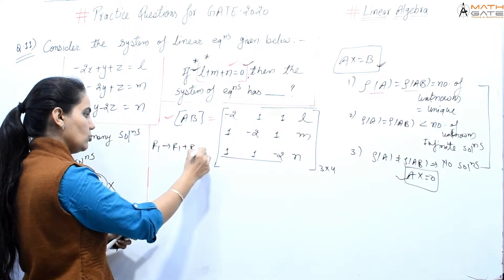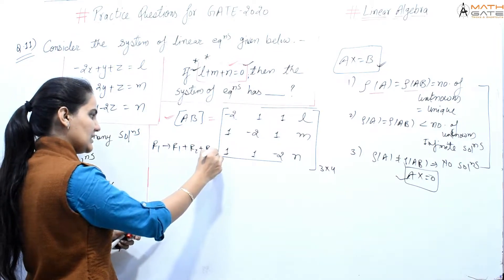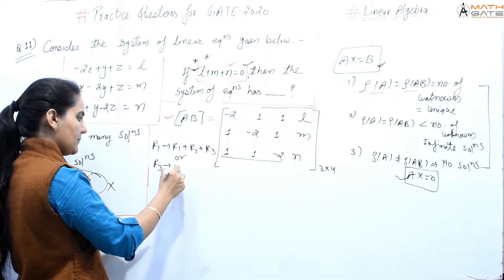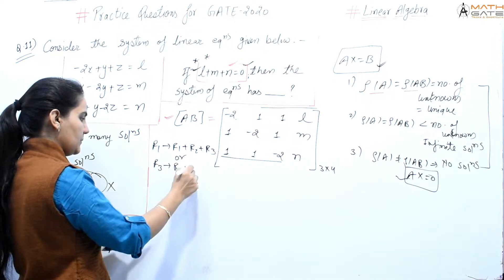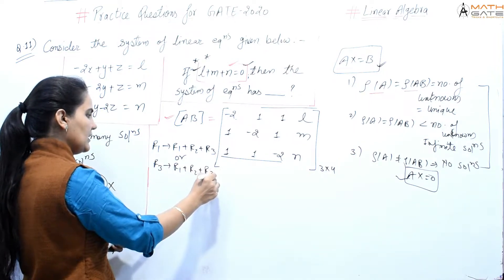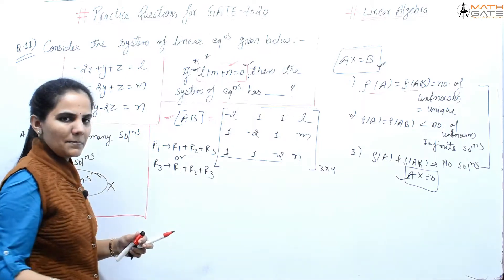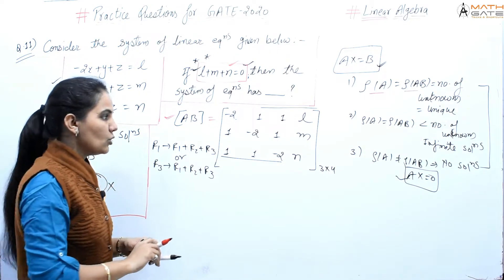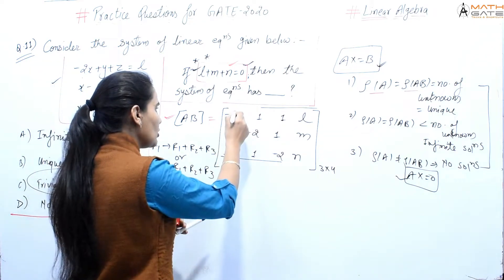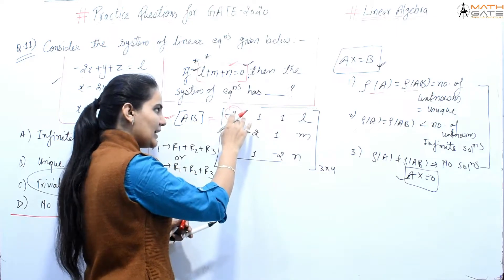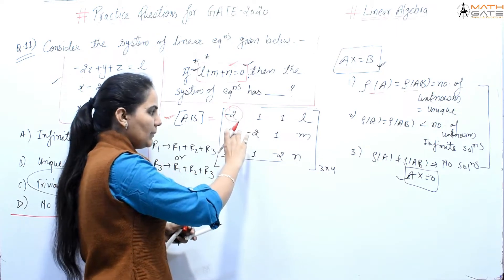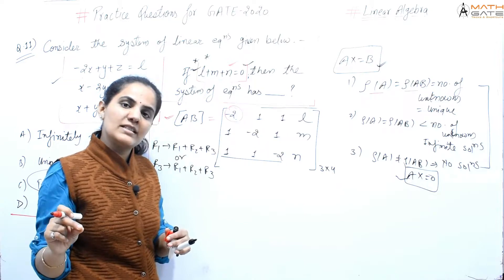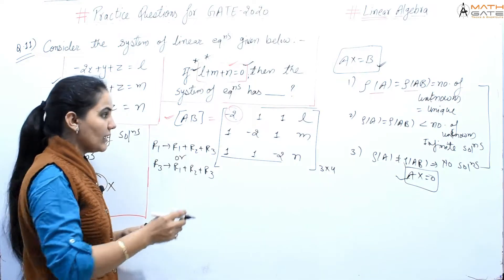Now we apply row operations. We will use R3 = R1 plus R2 plus R3, because we can see that adding all three rows together will make R3 almost zero, which will simplify the matrix.